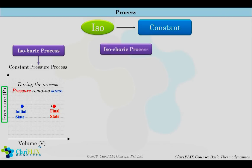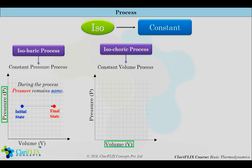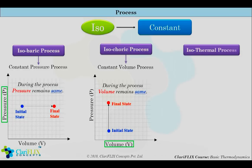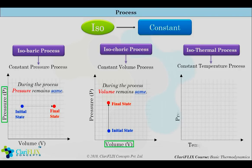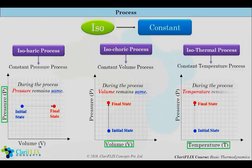The isochoric process is a constant volume process. On the PV diagram, the initial state is marked by the blue dot and the final state by the red dot, with volume remaining the same. The heating of a balloon is a constant volume process. In the isothermal process, temperature remains constant. On the PT diagram, the initial state is marked by the blue dot and the final state by the red dot, with temperature remaining the same throughout. Refrigeration is the isothermal process because we need the same temperature within the refrigerated space.